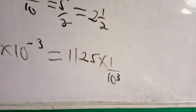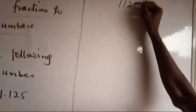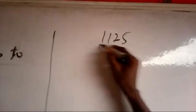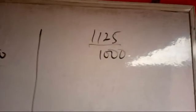Now we have to solve this. We have 1125 over, when we calculate 10 to power 3, we will be having 1000. Yes, when we calculate that we will be having 1000. Now we have to solve this one using division.